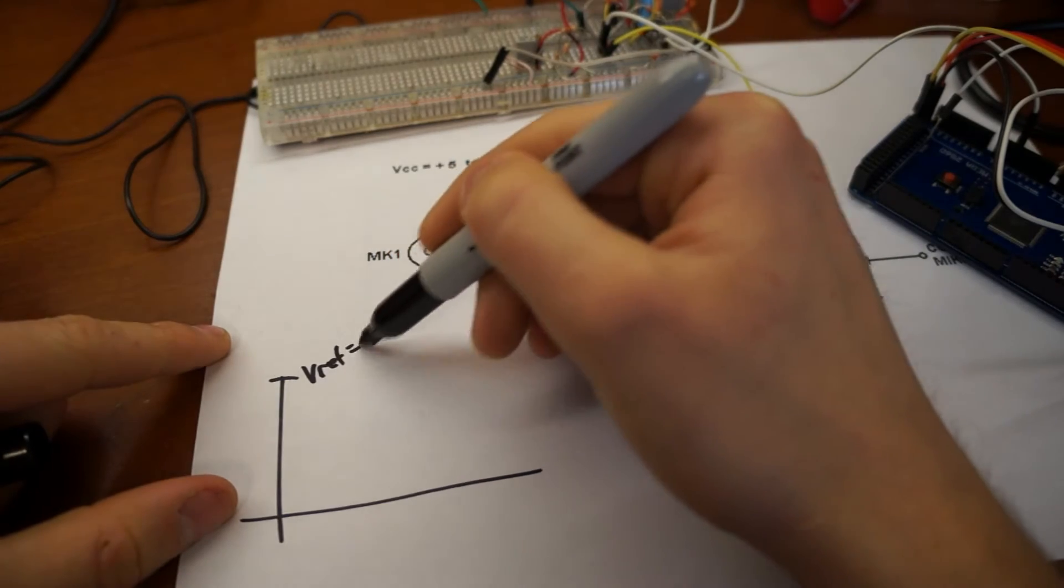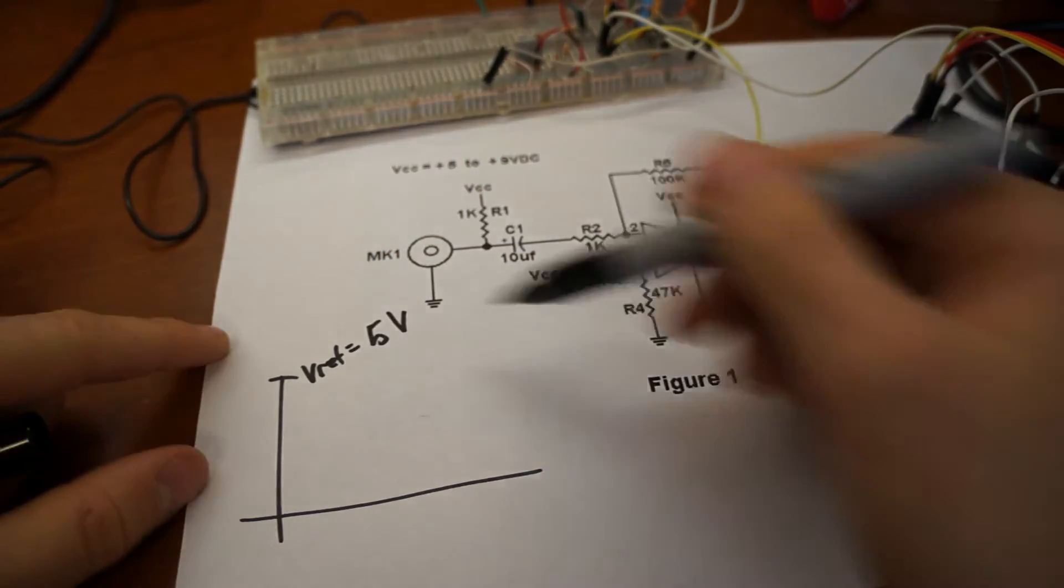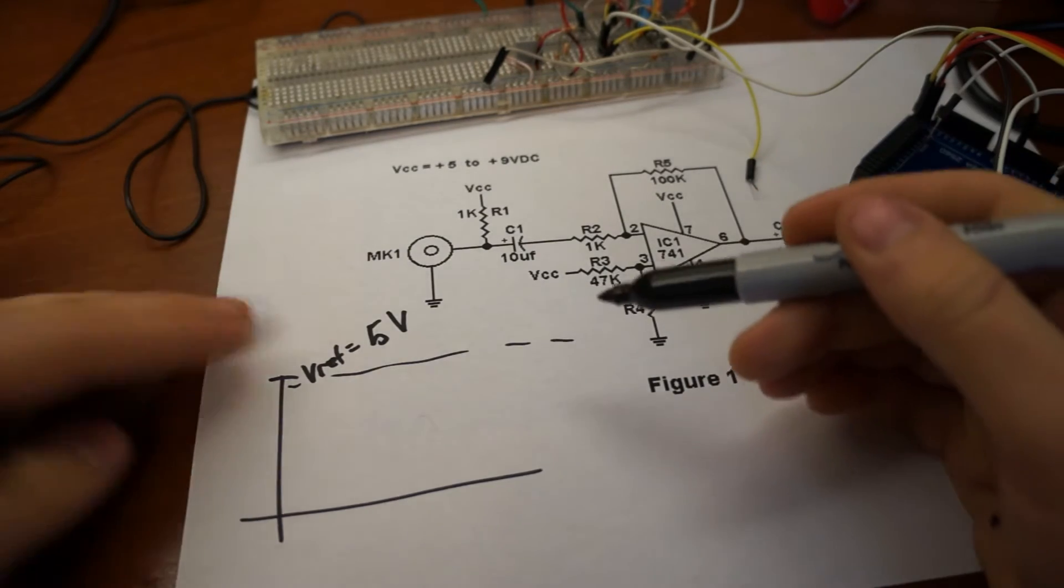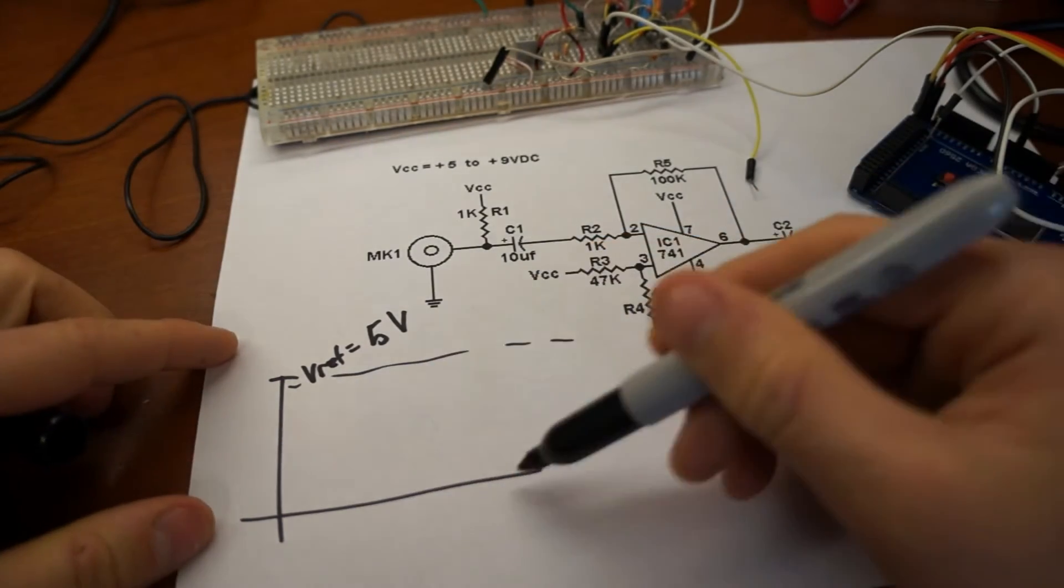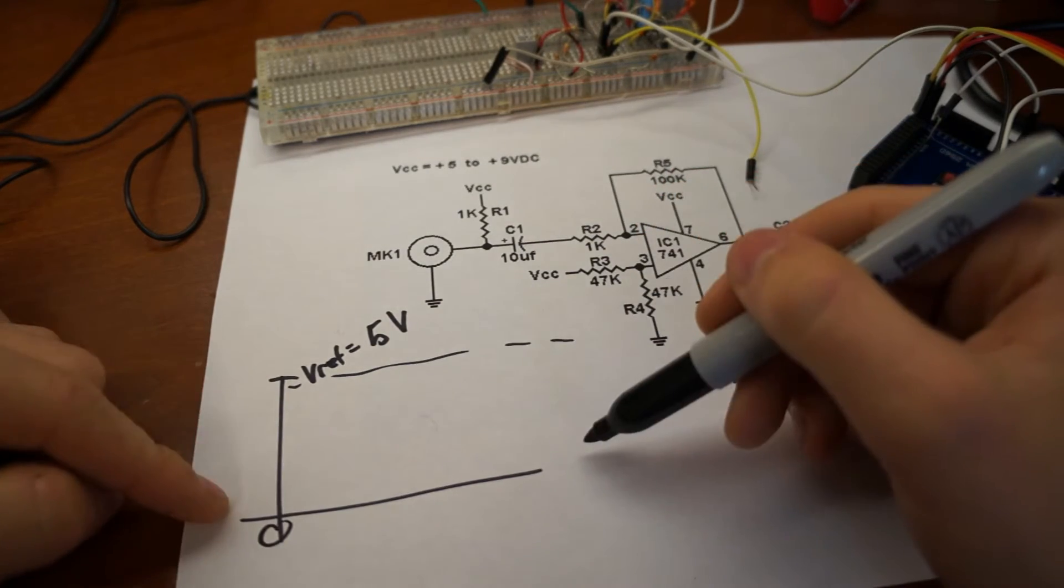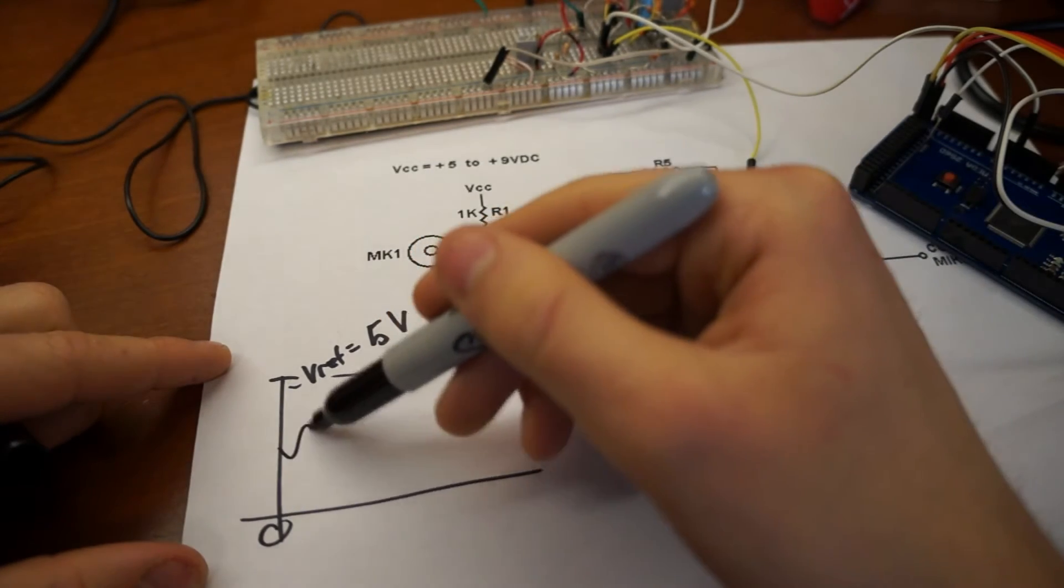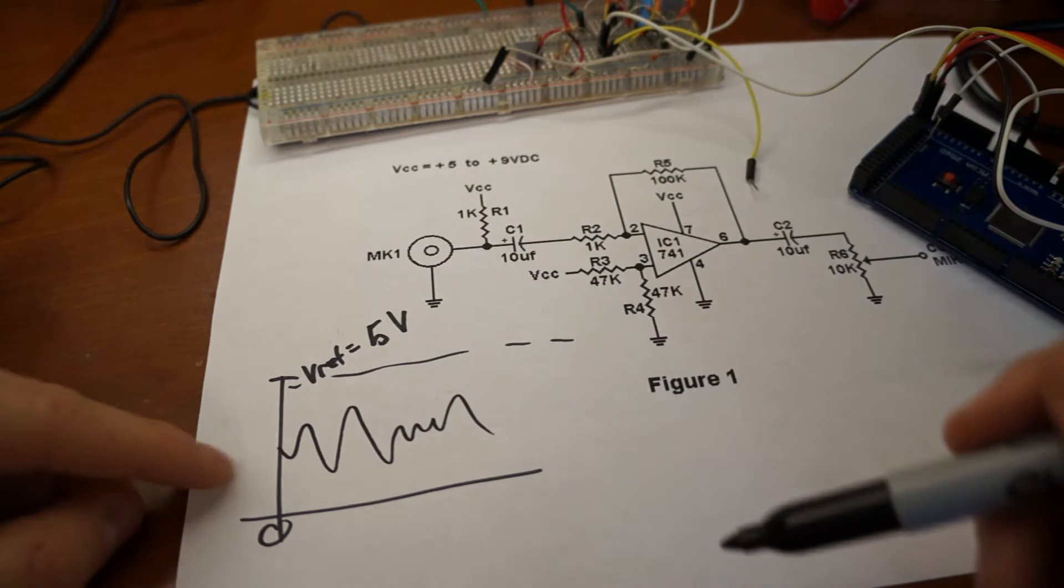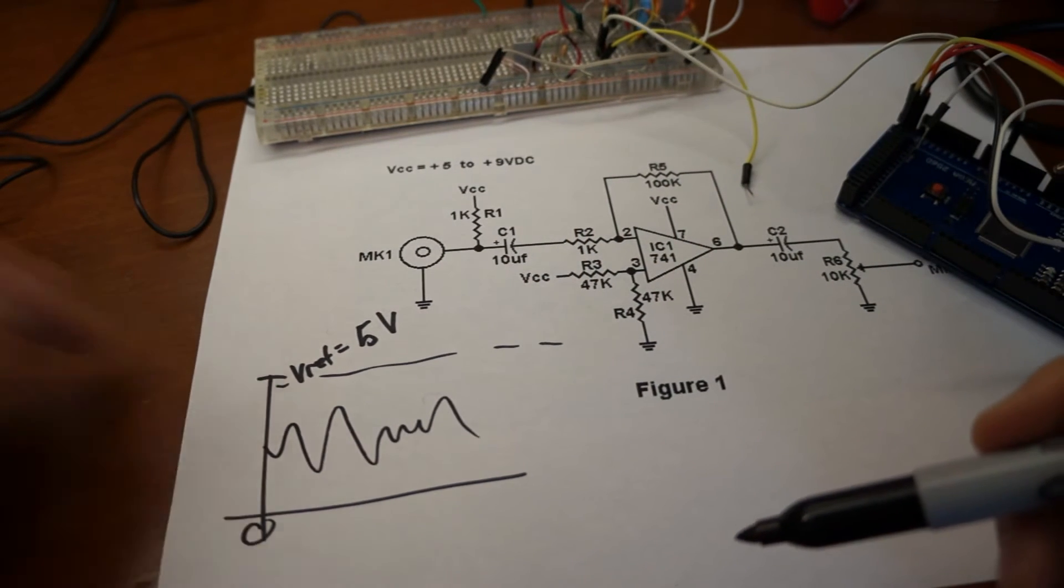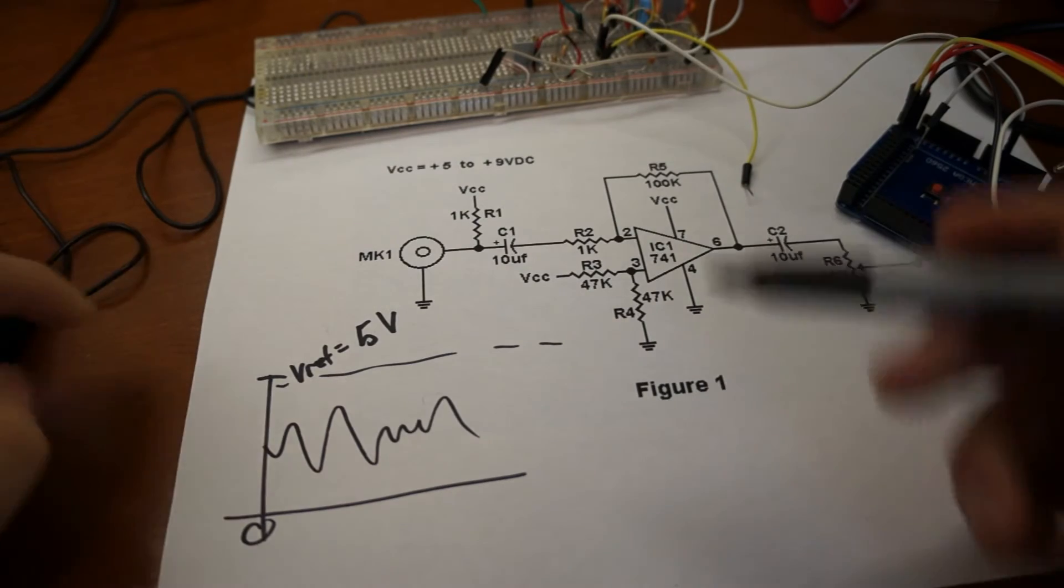So let me explain. The VREF is 5 volts. That's the highest value that the analog input can receive. And the lowest value is zero. We don't want to put negative voltage into our Arduino's pin. And so we want to have a signal that is somewhere in that region.